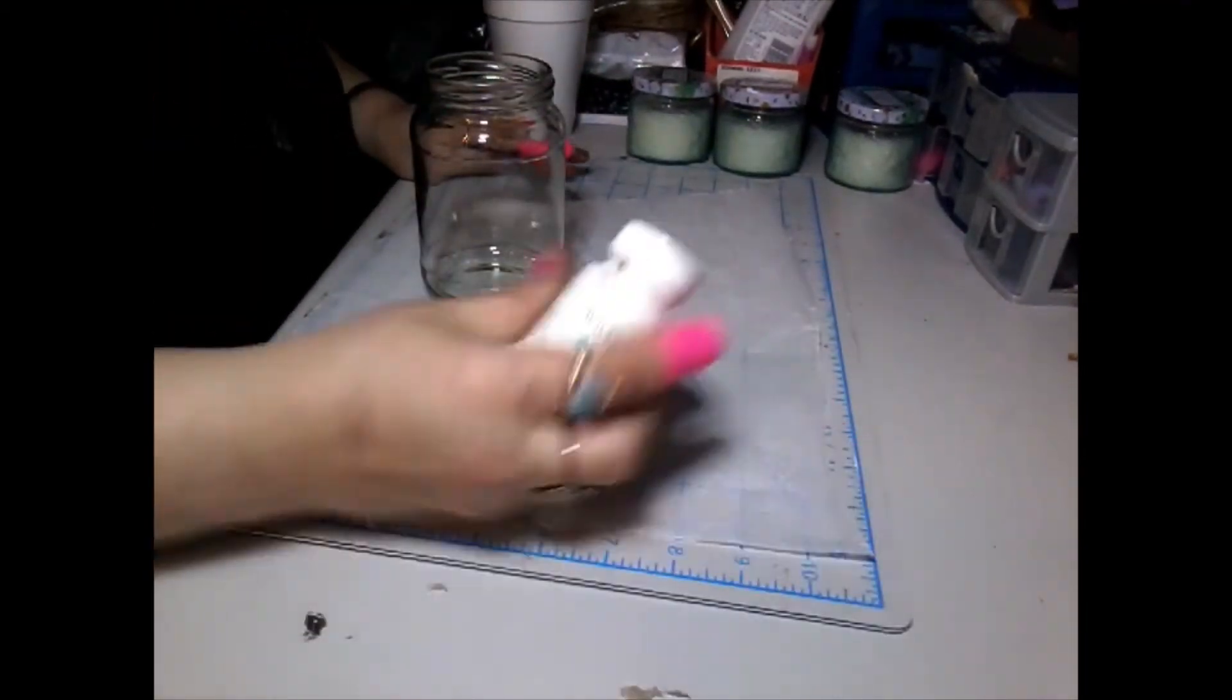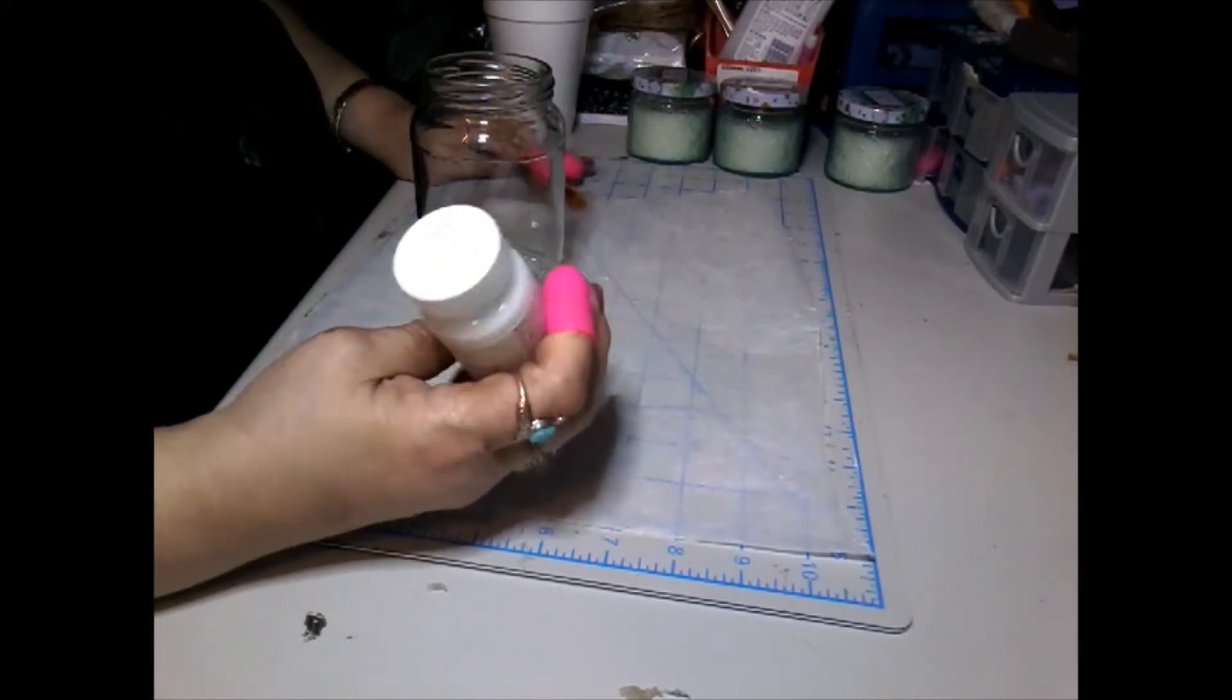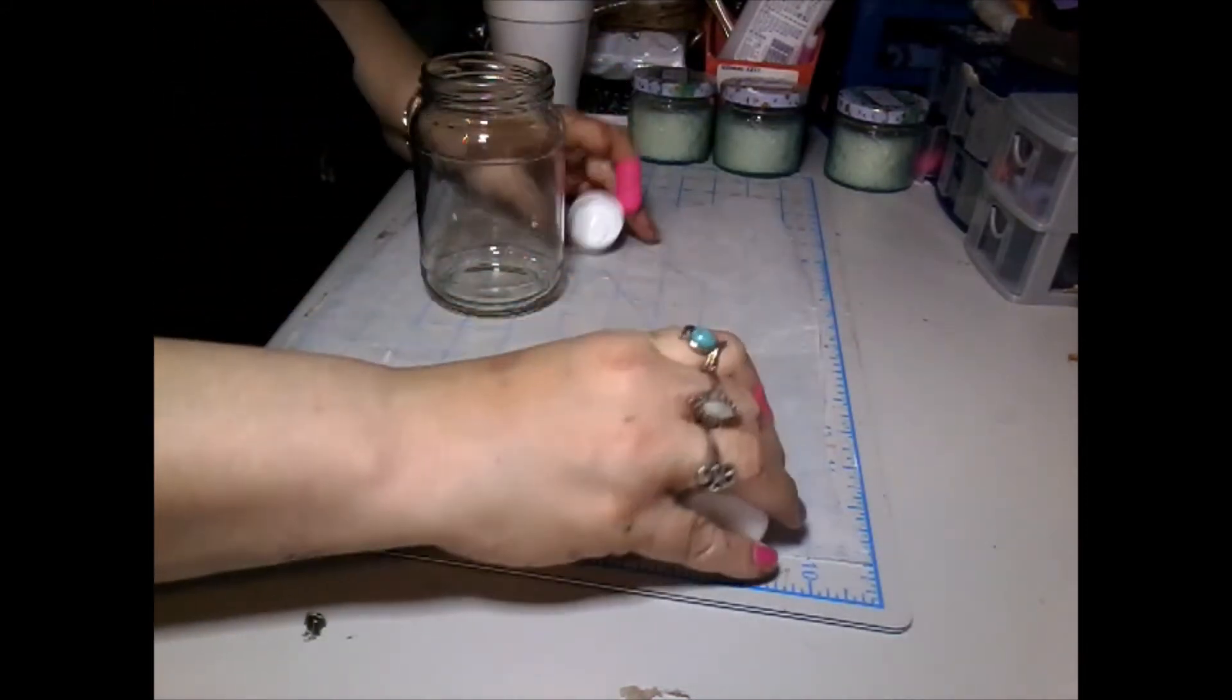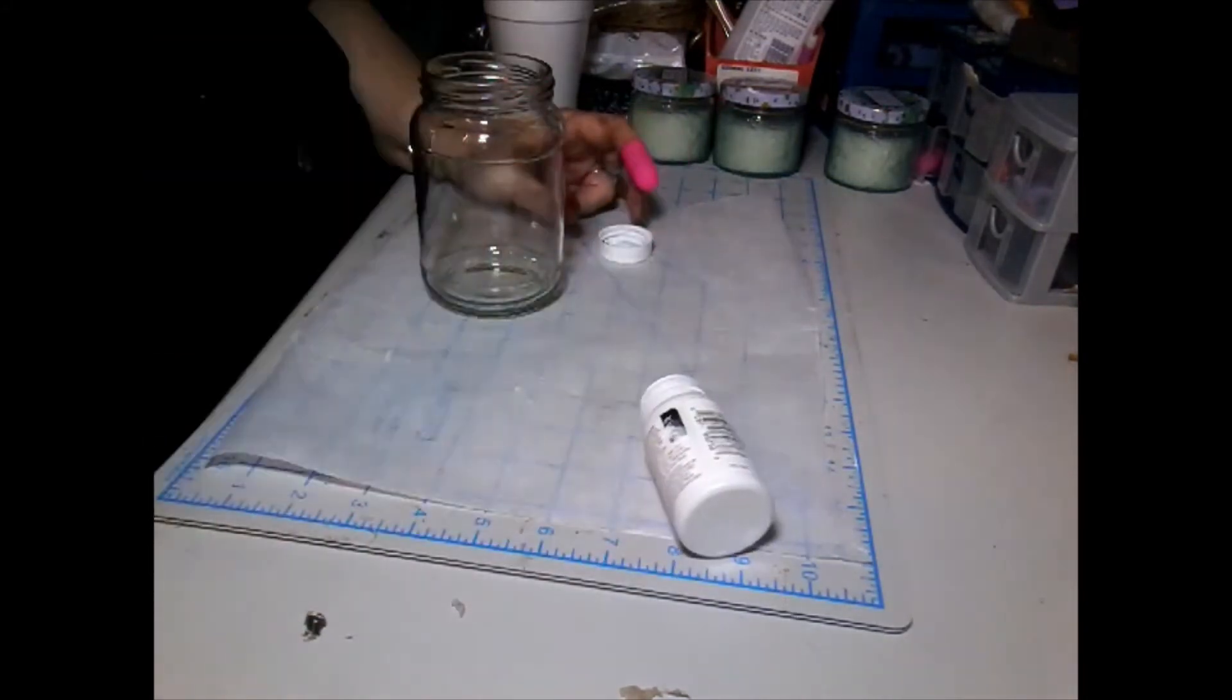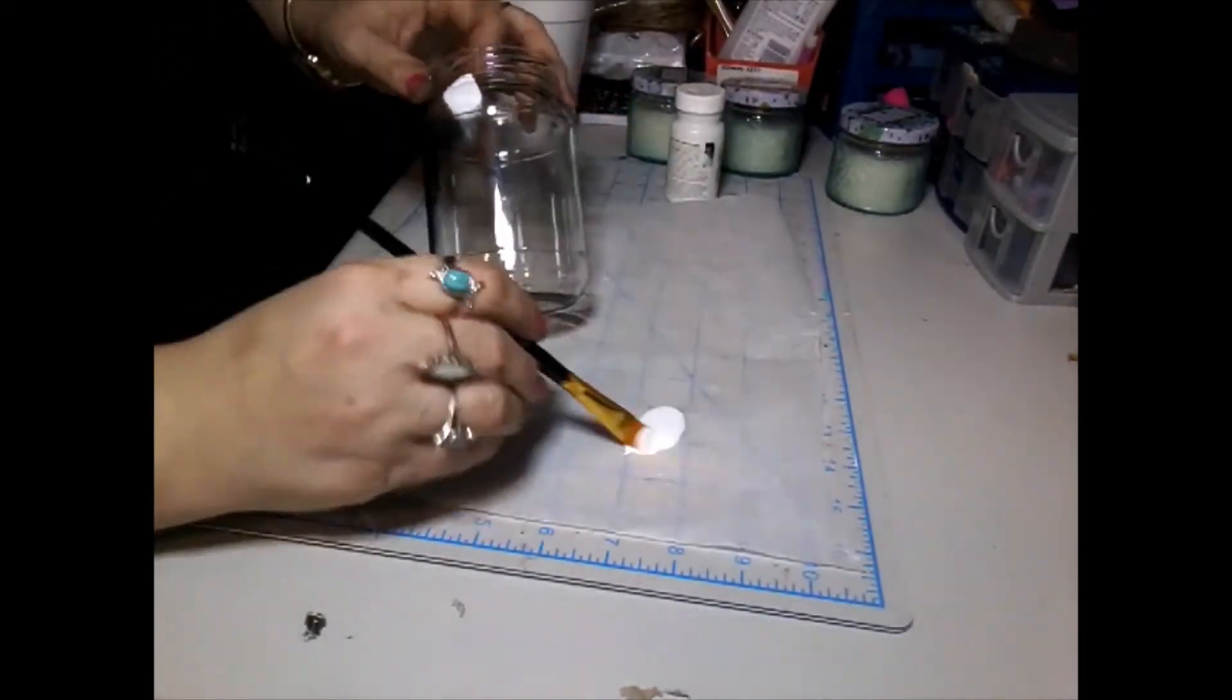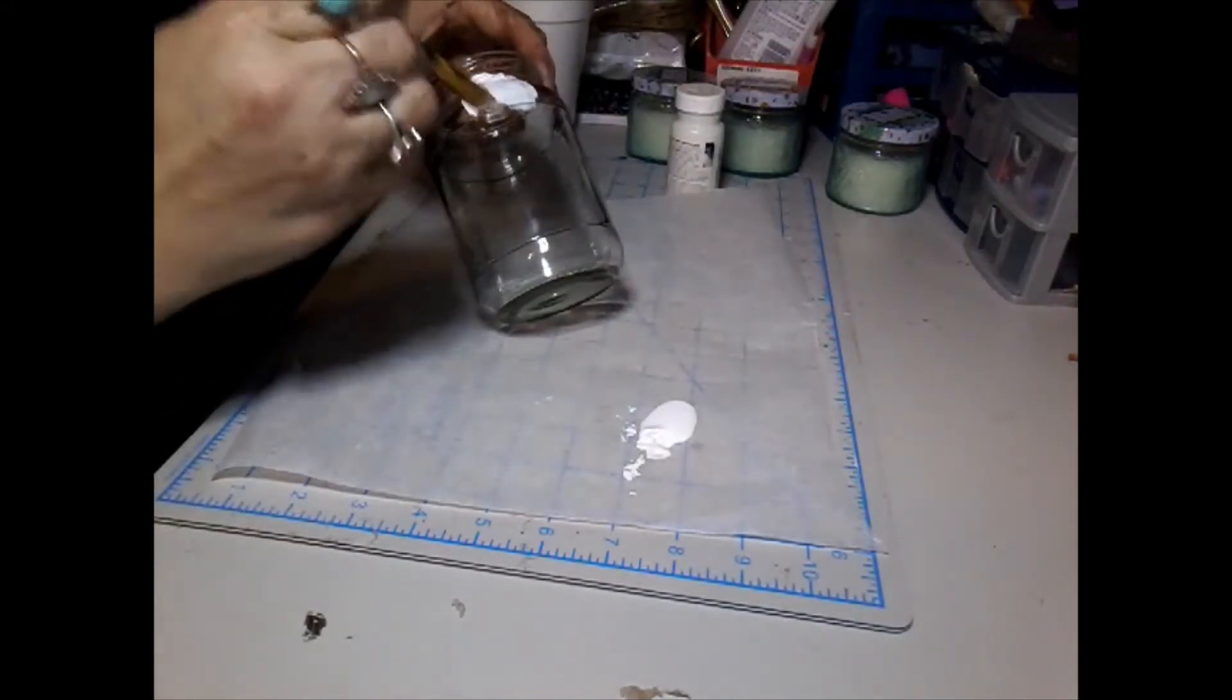I'm going to use Waverly chalk paint in white color. This really covers glass really well. I love chalk paint and I'm just going to give it a good coat of the Waverly chalk paint. We're just going to start brushing it on.